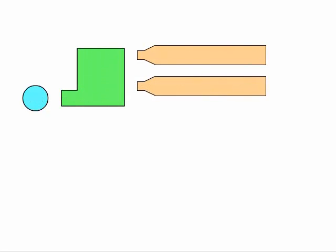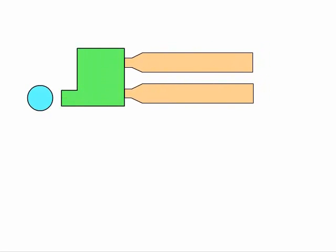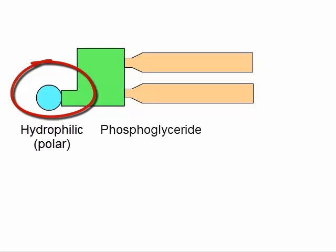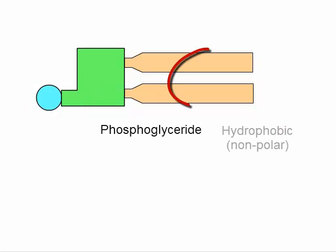The overall lipid molecule is termed a phosphoglyceride. An important functional part of this lipid is the hydrophilic region, also called the polar area, that can easily dissolve in water. There is also a hydrophobic or non-polar component that is relatively impermeable to water.